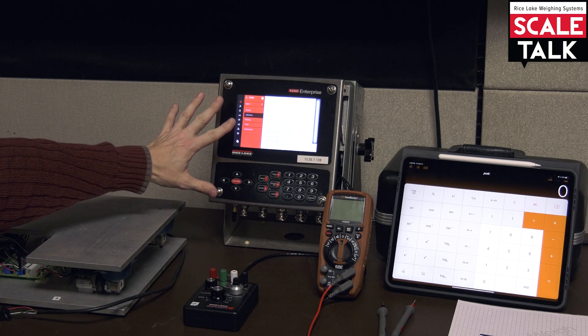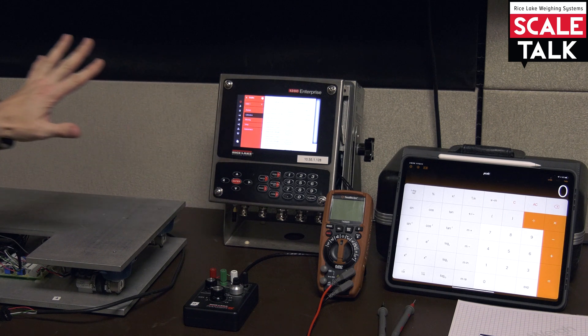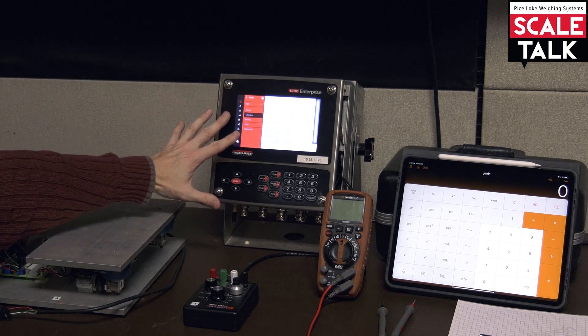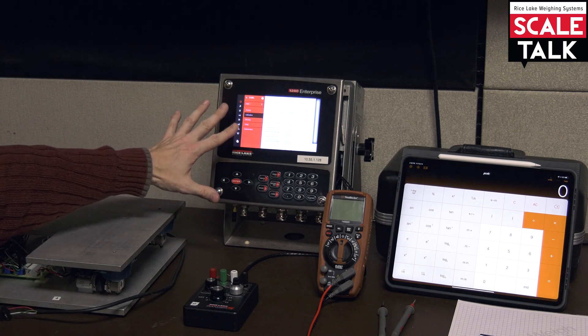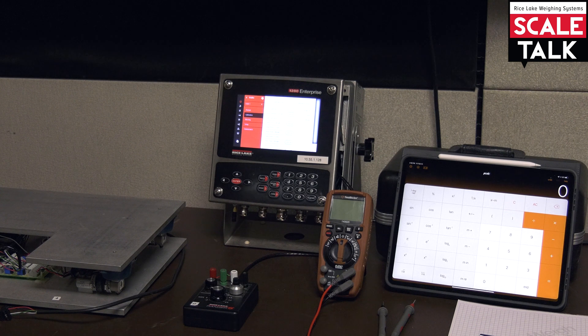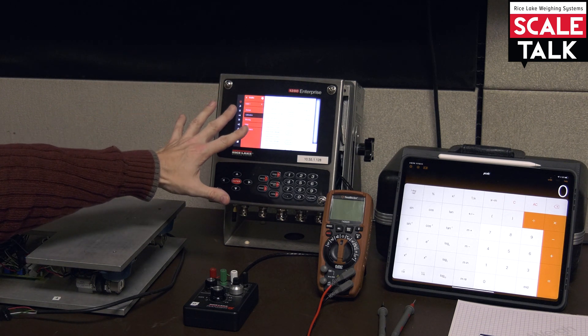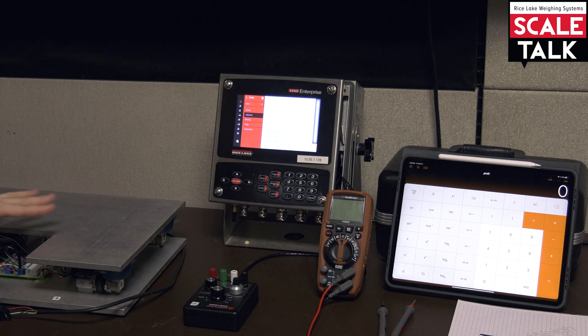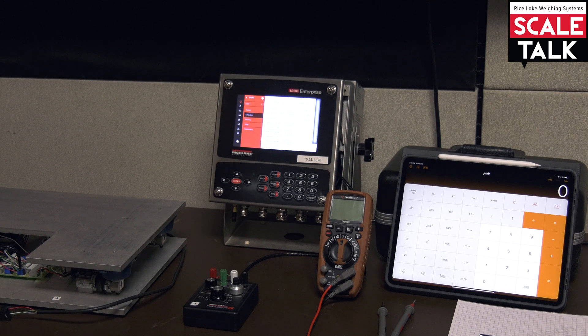So what we need to find out is what is the excitation voltage that's being provided by the indicator and we also need to know what the millivolt output is of the load cells in our system. You could use a nominal 10 volts for the 1280 and in this case I have a nominal 3 millivolt per volt system here. But if we want to try to make this at least a little bit more accurate, we can truly measure what's being output and we can take the average of all of the load cells in our system and use those values for our calculations.